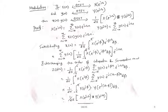The last property we discuss is modulation. Modulation is generally the multiplication of two signals in the time domain; in the frequency domain it results in a periodic (circular) convolution between the DTFTs of those two signals. If x(n) has DTFT X(e^{j\omega}) and y(n) has DTFT Y(e^{j\omega}), then the DTFT of x(n)·y(n) is (1/2π)·X(e^{j\omega}) circularly convolved with Y(e^{j\omega}).